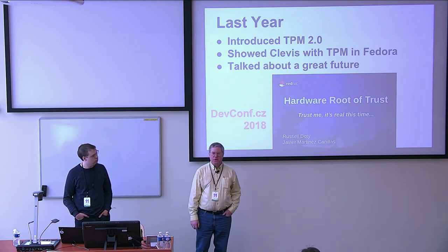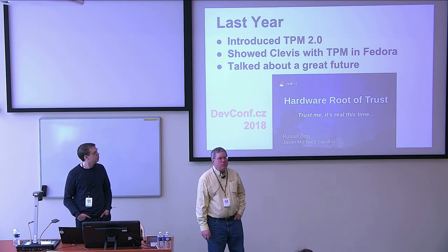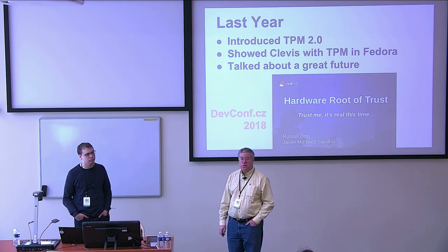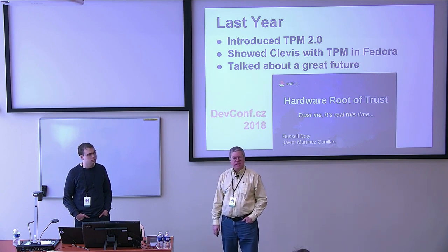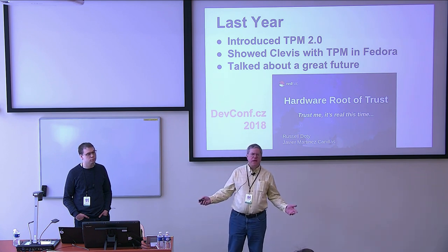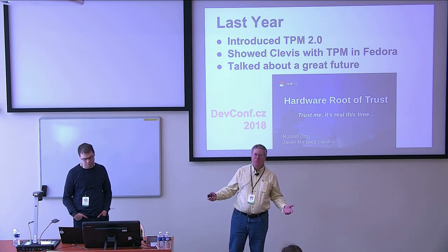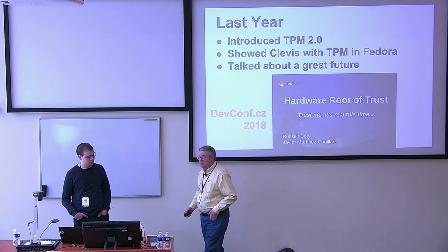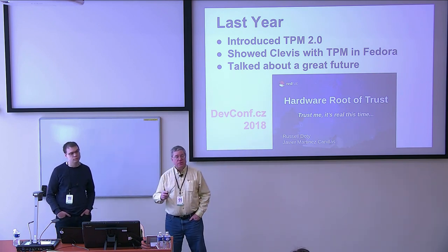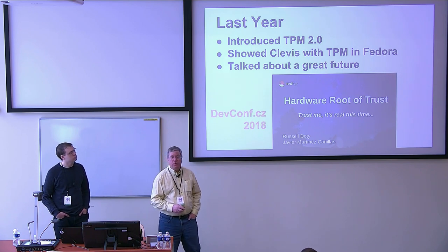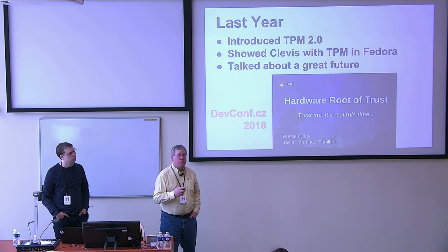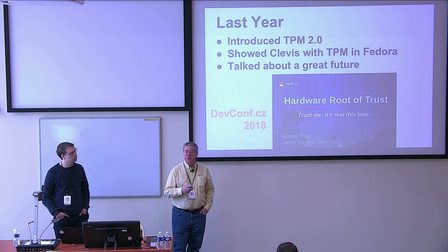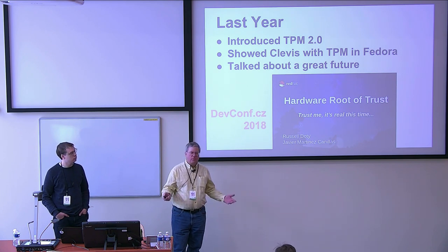This is our second year — we're back. Last year we were talking about technology, the neat things that can be done with some of the new technology, and we were basically here with the message of 'it's real this time, trust us.' Well, we're back. It's real this time, and we've got some solid things to show. Last year we were doing a technology preview of the trusted platform module in Fedora, showing a preview of network-bound disk encryption using the hardware root of trust, again in Fedora, and talking about a wonderful future.